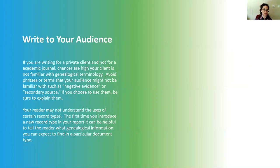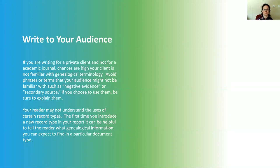Write to your audience. If you're writing for a private client and not an academic journal, chances are high that your client is not familiar with genealogical terminology. Avoid phrases or terms your audience might not know, such as 'negative evidence' or 'secondary source.' If you choose to use them, that's fine — just be sure to explain the phrase the first time you introduce it so your reader knows what you're talking about. Similarly, your reader may not understand the uses of certain record types, so the first time you mention one, give a quick explanation of what that document is used for.